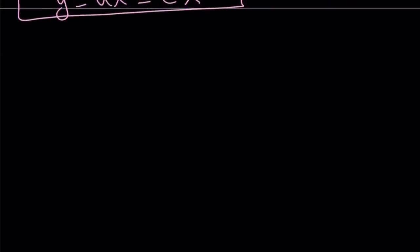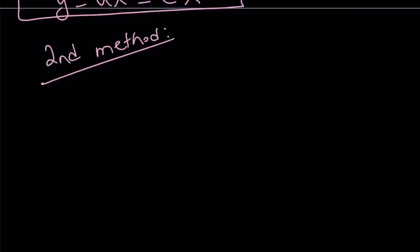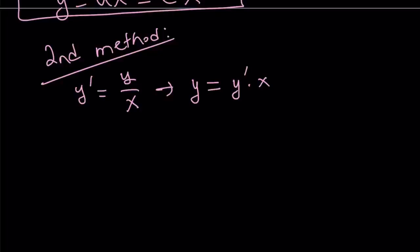Let's talk about the second method, which involves something very different. I'm going to first cross multiply — I don't want x or y to be zero. This gives us y equals y prime times x. Since I have an equation in y prime, I'm going to differentiate both sides of this equation.